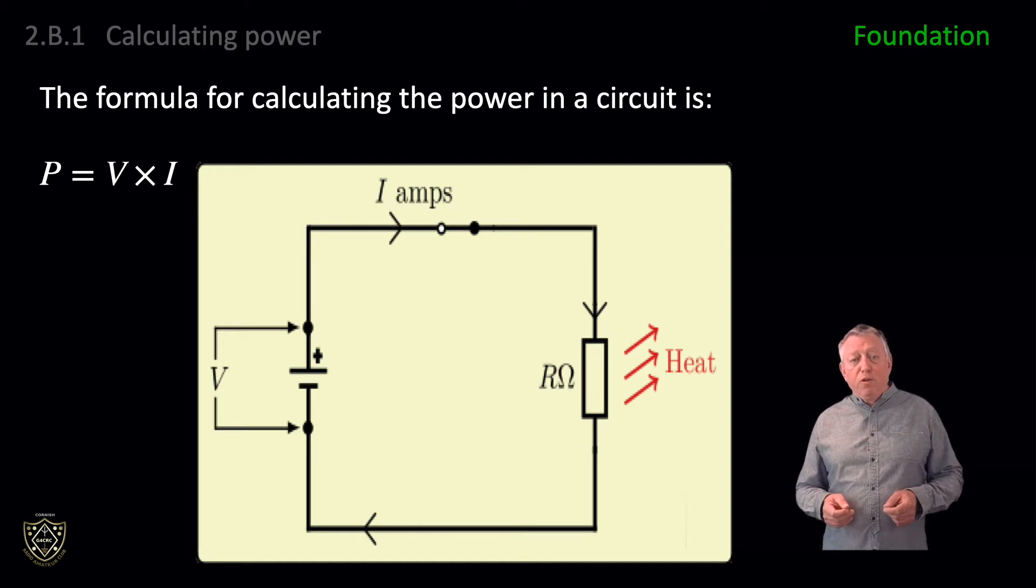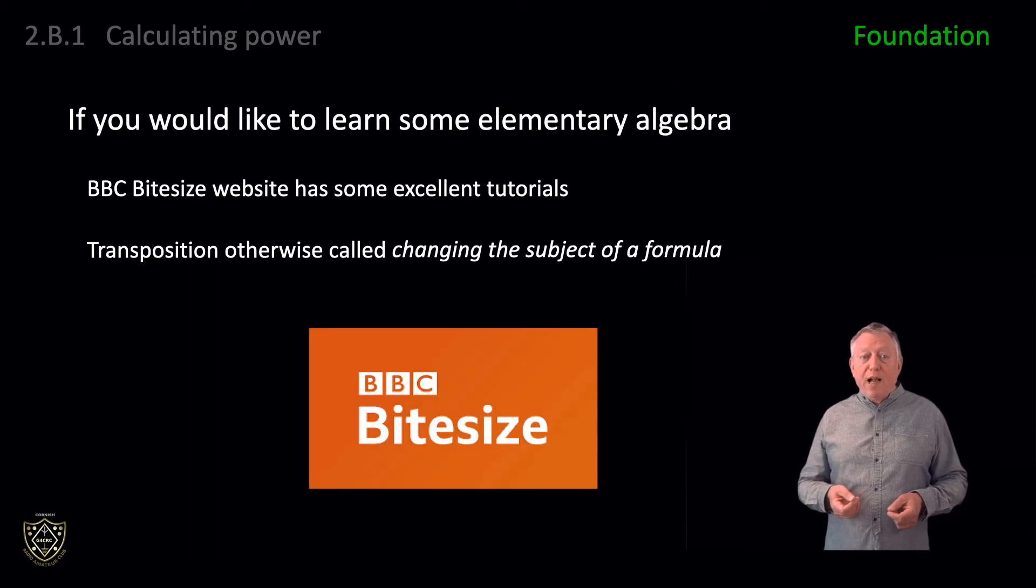The preamble to the foundation syllabus tells us that it should not be a barrier for most candidates with basic numeracy. Where formula manipulation is required, a simple triangle method, which we will cover shortly, can be used for the two formulas that we encounter at foundation level. However, if you would like to learn some elementary algebra, the BBC Bitesize website has excellent tutorials on transposition, otherwise called changing the subject of a formula.